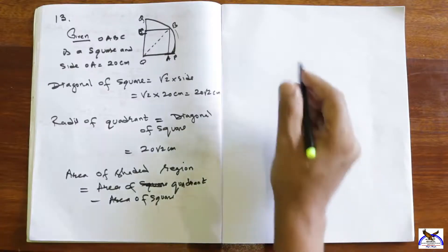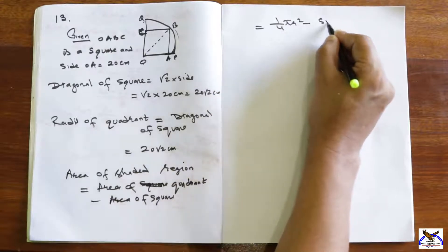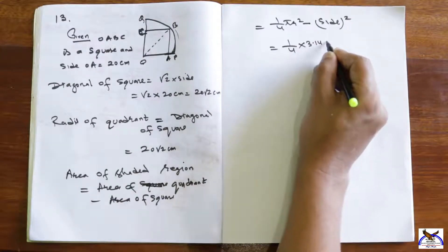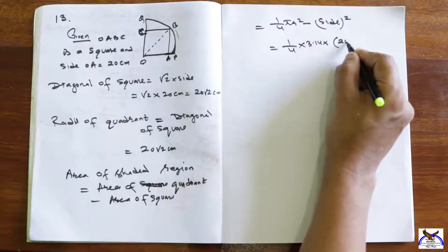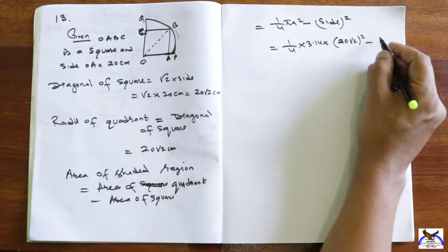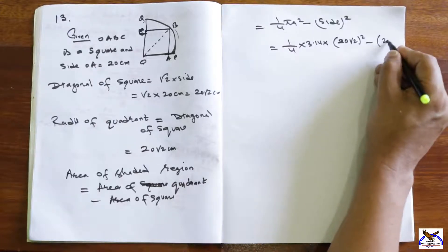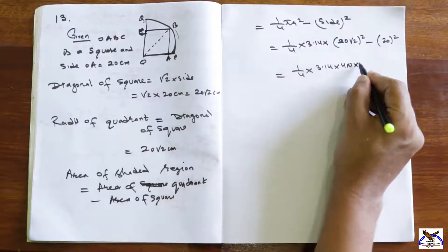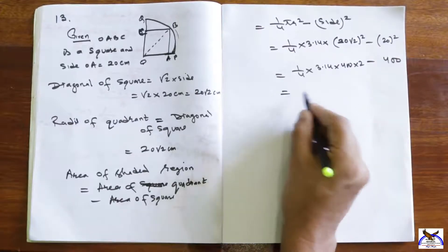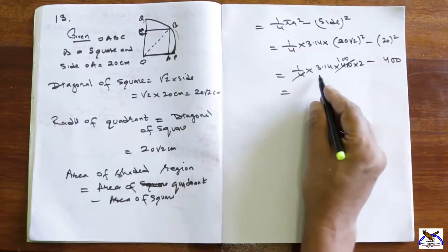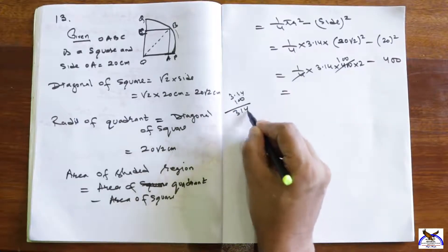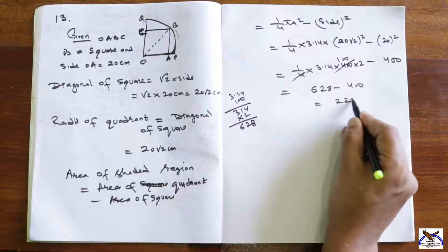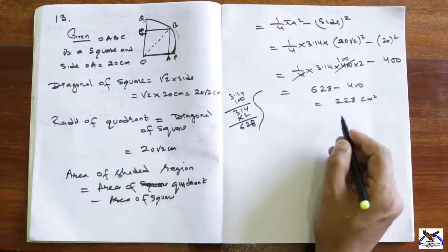Area of shaded region equals area of quadrant minus area of square. That is (1/4) pi r squared minus side squared. Substituting: (1/4) into 3.14 into (20 root 2) squared minus 20 squared. This gives (1/4) into 3.14 into 800 minus 400, which equals 3.14 into 200 minus 400 equals 628 minus 400 equals 228 cm².